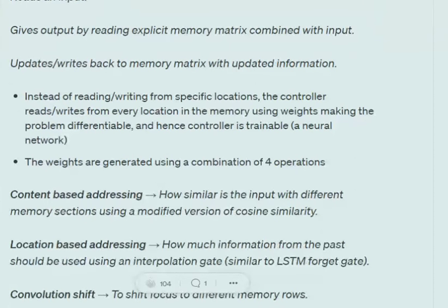Instead of reading or writing from specific locations in the memory matrix — the memory matrix can be taken as an N×N NumPy array — what it does is use attention weights to read from and write to every location. At locations where we don't need to add anything, the weights would be very low, and at locations where we wish to make major updates, the weight would be very high. Depending upon the weights, the trade-off between writing heavily and writing low can be managed.